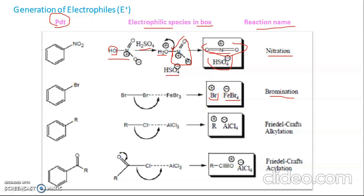In bromination, the electrophile is Br+ and the corresponding negative part is FeBr4-. Normally we use bromine and the Lewis acid FeBr3 as catalyst. The role of the Lewis acid is to draw electron density from one of the bromine atoms — Lewis acid accepts lone pairs by definition. As a result, there is partial positive charge generation over this bromine, and finally the bond breaks to give the free electrophile Br+.